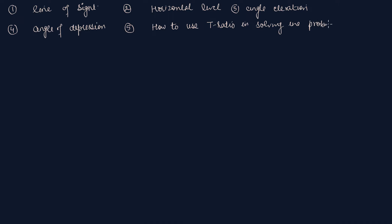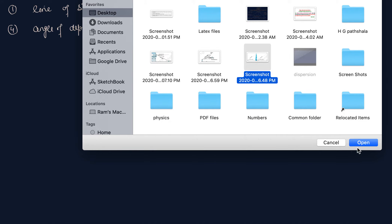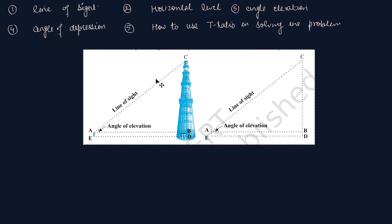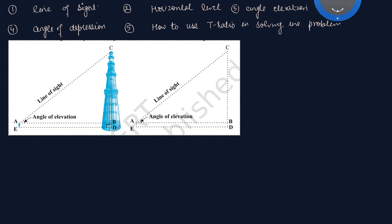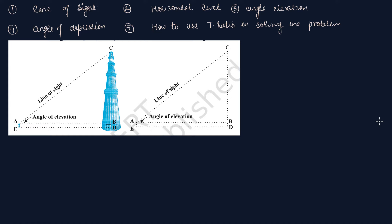तो यह content हमारा रहेगा आगे जो चर्चा का विषय रहेगा। सबसे पहले हम अपना ध्यान लगाते हैं: line of sight क्या होता है? Line of sight को समझने के लिए हम एक image का सहारा लेंगे। यहाँ एक बच्चा खड़ा है और उसकी अपनी height AE है।